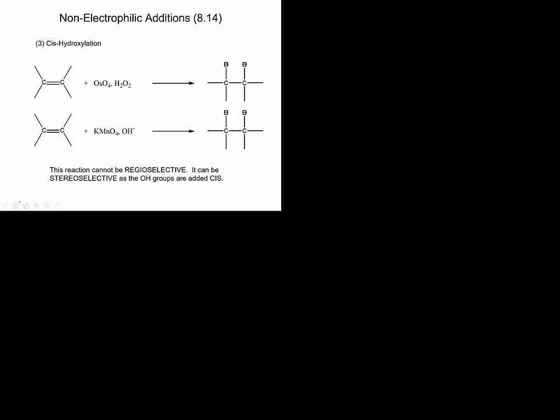Now, hydroxylation. A few minutes ago we took a double bond, made an epoxide, then added H⁺/H₂O to open the epoxide, adding two OHs trans across the double bond in two steps to make a trans diol. Here's a way to do it in one step — but this time you get the cis diol.